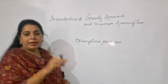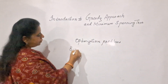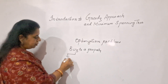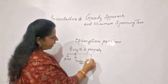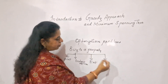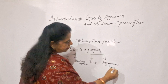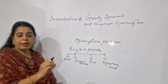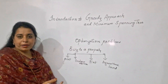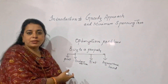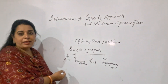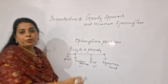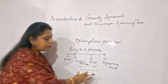To understand the greedy approach, consider this example: suppose there is a problem to buy a property. You can buy a plot, an independent house, a flat in an apartment, or agricultural land. If the constraint is that you must live in the property immediately after purchase, then a plot and agricultural land are not suitable. An independent house and a flat are the feasible solutions — the options that satisfy the constraint.